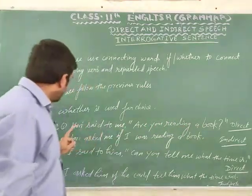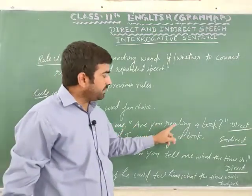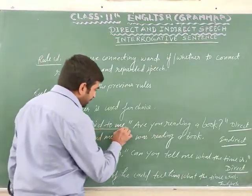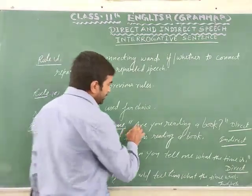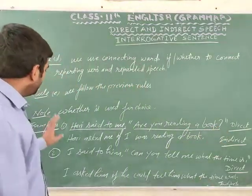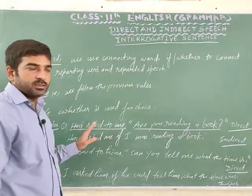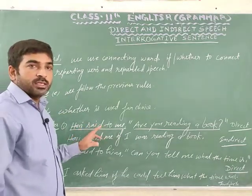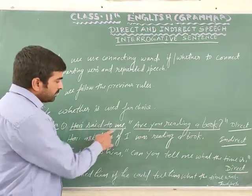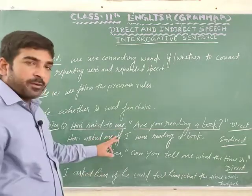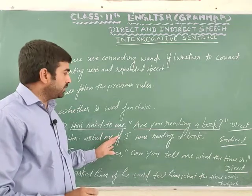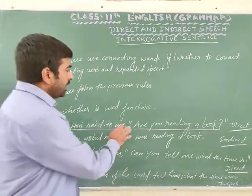Example: 'Hari said to me, are you reading a book?' Here 'said to' is the reporting verb and 'are you reading a book' is the reported speech. Since the reporting verb is in past tense, 'said to' changes into 'asked'. So we write: Hari asked me — and we use the connecting word 'if'.